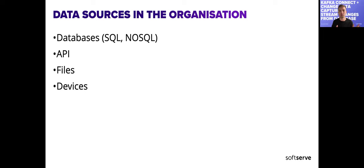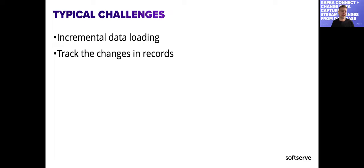A third option is files — sometimes a vendor will send you files every month or daily with a summary of your sales, and you can load that data into the platform. The last option is devices: if you have a factory, solar farm, or wind farm with sensors, those sensors can send data to a message broker like Kafka or Event Hub. But let's focus first on the database example.